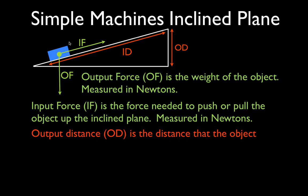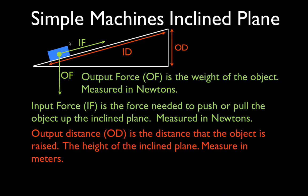So those are the two forces. Now we have the two distances. The output distance, abbreviated OD, is the distance that the object is raised, and it is simply the height of the inclined plane.